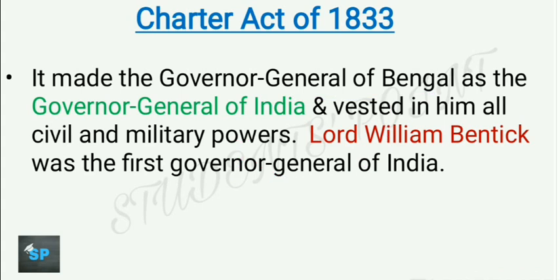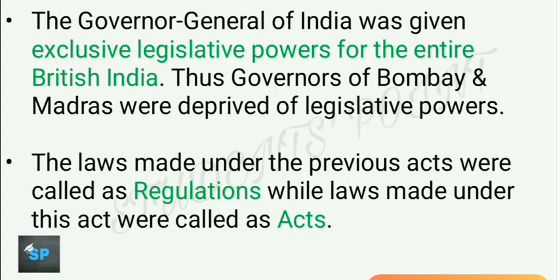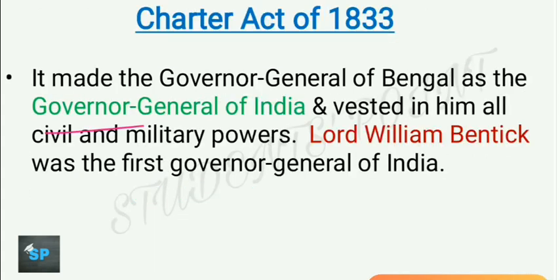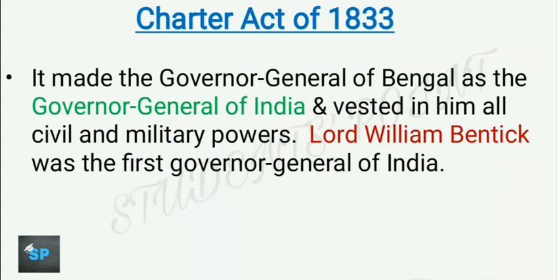Lord William Bentinck became the first Governor General of India, who would now have all civil and military powers. We saw the first Governor General of Bengal was Lord Warren Hastings; now Lord William Bentinck is the first Governor General of India. The designation would later change again — after 1857 the revolt will result in the title of Viceroy of India.